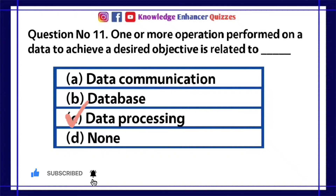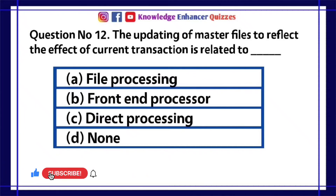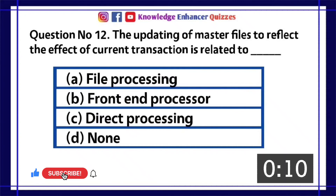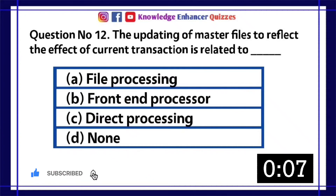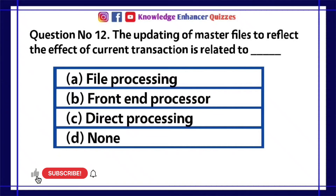Option C is the right answer. Question number 12. The updating of master files to reflect the effect of current transaction is related to dash? A. File processing. B. Front end processor. C. Direct processing. D. None. Option A is the right answer.